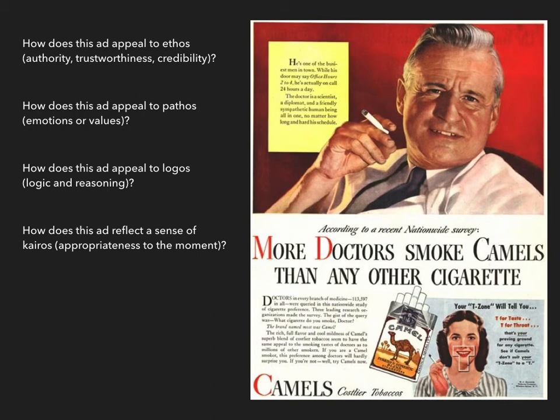So what do we see here in terms of each of the different rhetorical appeals? Starting with ethos — authority and credibility — it comes from doctors in two ways. The doctor at the top is described in a way that makes him seem authoritative and trustworthy, not just because of his medical knowledge, though that's implied, but because of his busyness, and also because he's a sympathetic and friendly human being. Doctors are portrayed as being particularly caring.